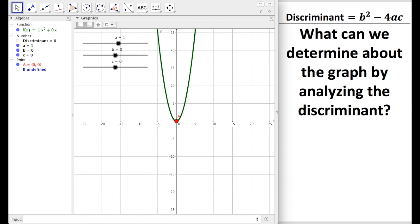In the last video, we set up the document in GeoGebra that you're seeing today. If you didn't see that video, you might want to go back to the previous video, watch that video, set up a document in GeoGebra, so that way you can follow along. Today we are interested in something called the discriminant. We're going to be answering this question: what can we determine about the graph by analyzing the discriminant?